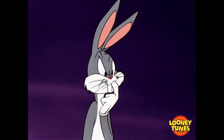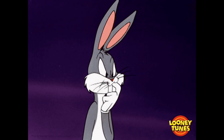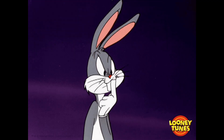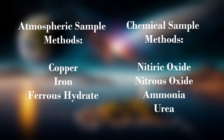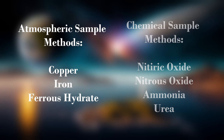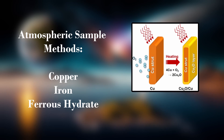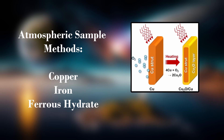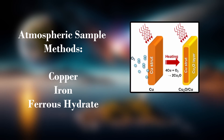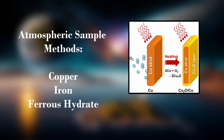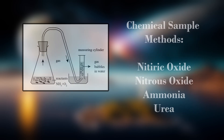You may be wondering how Rayleigh was able to isolate nitrogen from the atmosphere. Rayleigh used two different methods. The first method involved passing air over hot copper, sparking a chemical reaction that takes the oxygen out of the air by reacting with copper to form copper oxide.